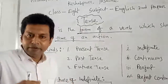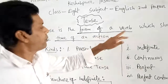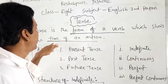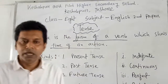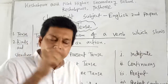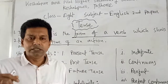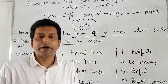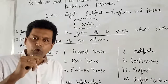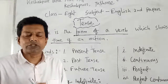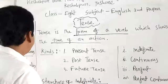I am repeating: tense is the form of a verb which shows the action. What is a verb? Verb expresses or indicates the doing of an action. That is, doing anything is called a verb.